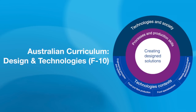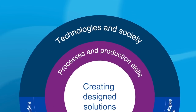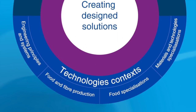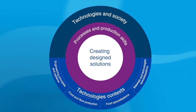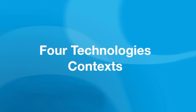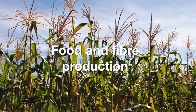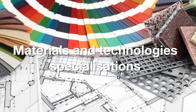The Australian Curriculum Design and Technologies comprises two strands: design and technologies knowledge and understanding — including technologies and society and technologies context — and design and technologies processes and production skills, the skills needed to design and produce design solutions. The curriculum focuses upon four technology contexts: engineering principles and systems, food and fiber production, food specializations, and material and technology specializations.